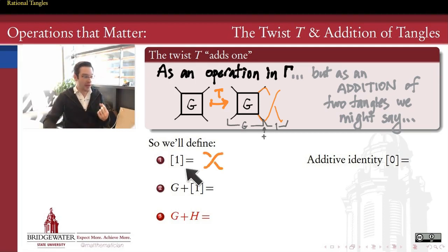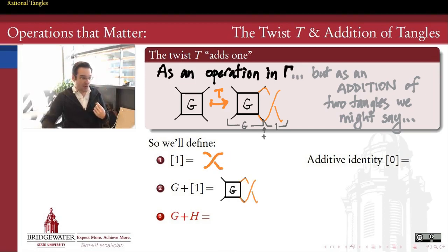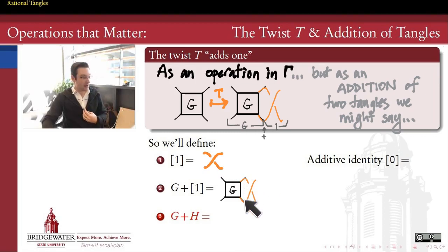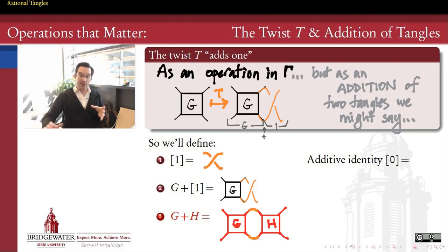We define the tangle [1] — using brackets to indicate a tangle rather than a number — as this single crossing tangle where the upward-sloping strand goes over the downward-sloping strand. Then g + [1] is the tangle we get by taking g and putting the one tangle on its right side and connecting up the strands horizontally. This generalizes to the addition of any two tangles g and h: place them side by side, g on the left and h on the right, then connect up the horizontal strands to make a single tangle out of the pair.